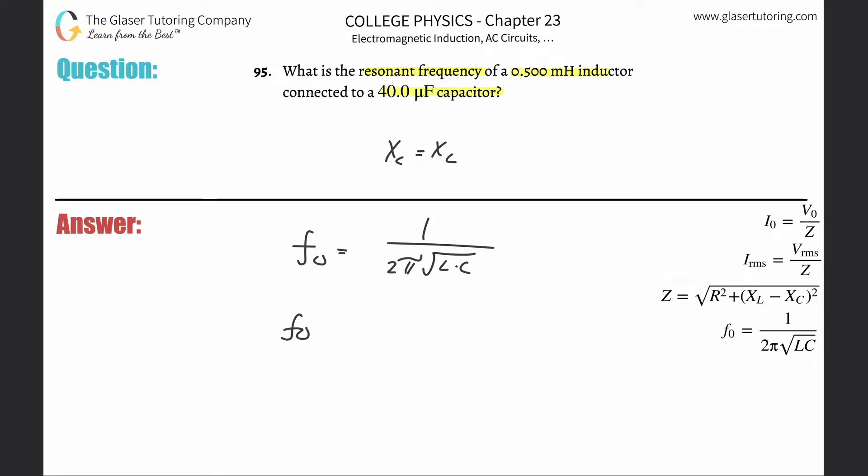So they give us those values. Calculating this one is very straightforward. Two pi times the square root, just be careful with your units.